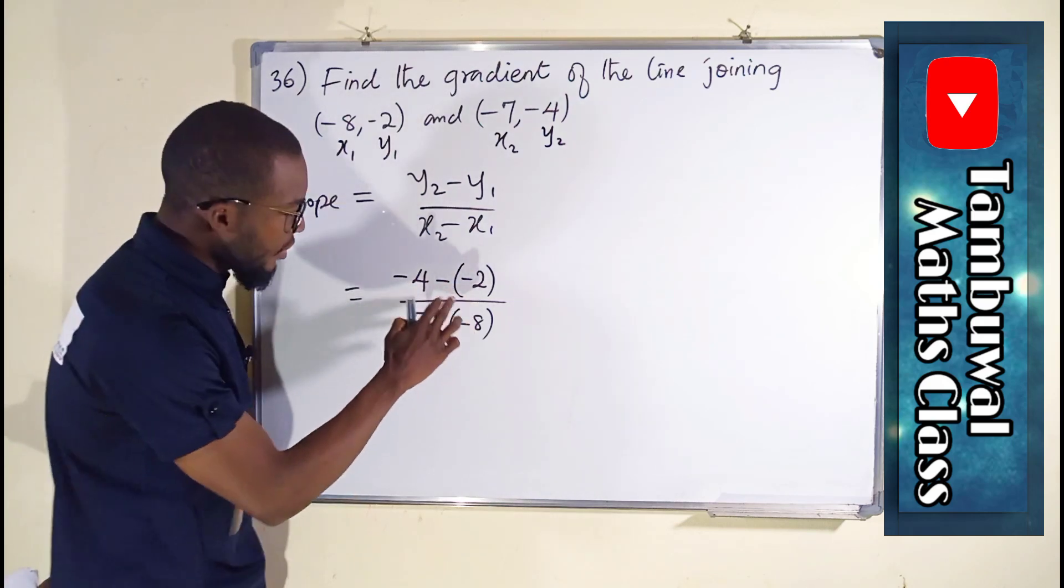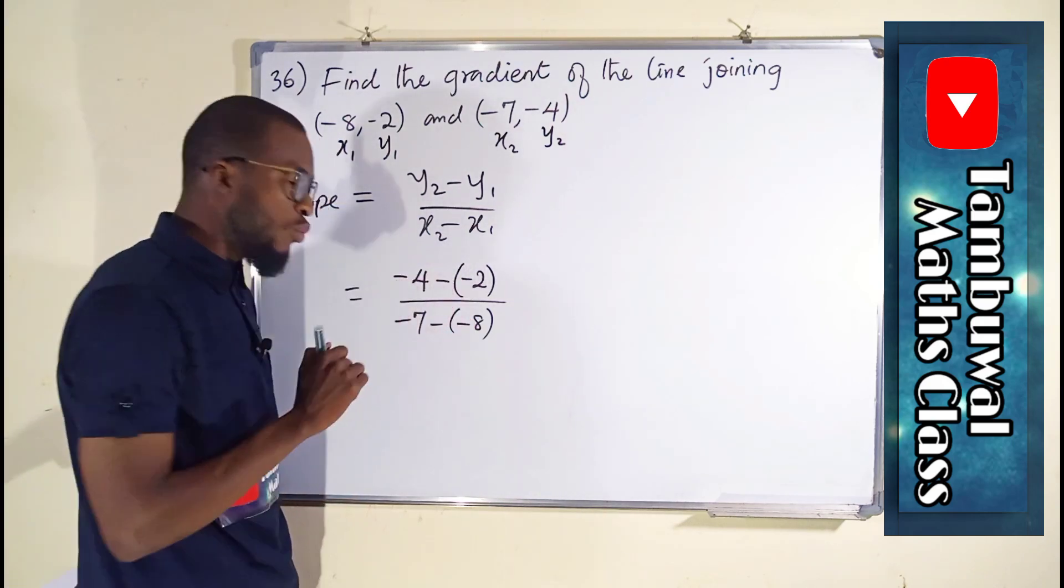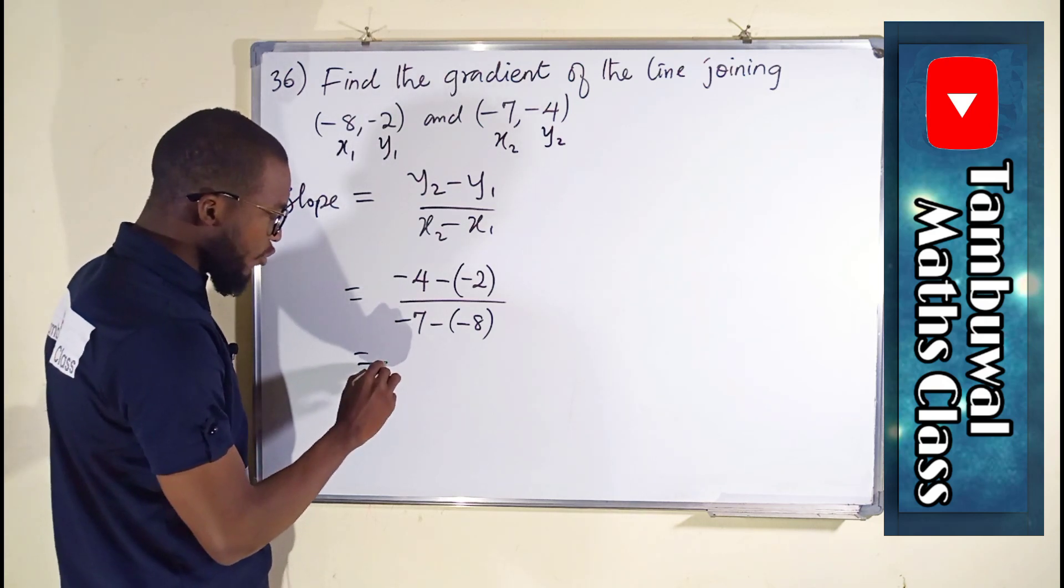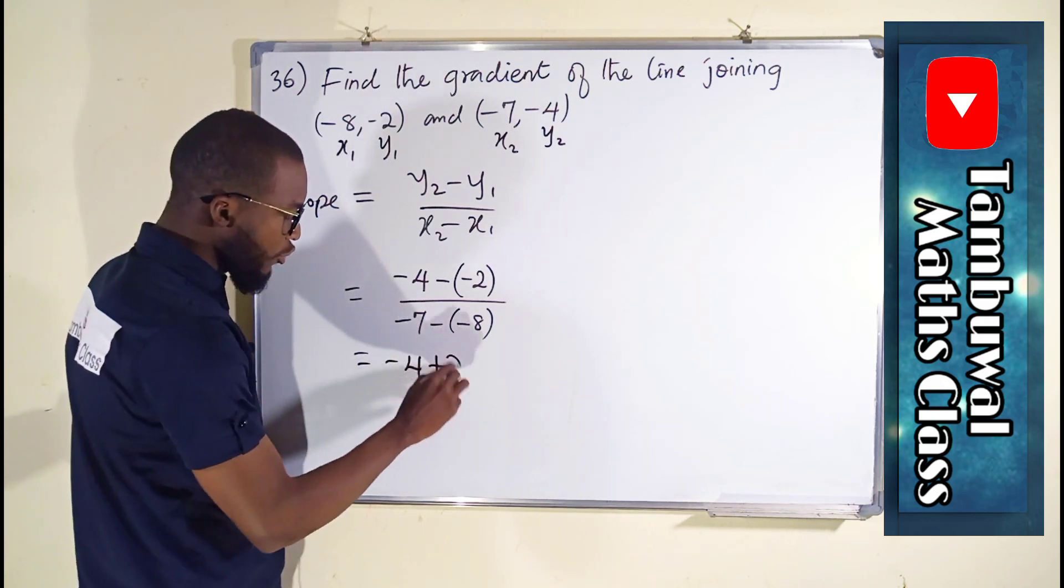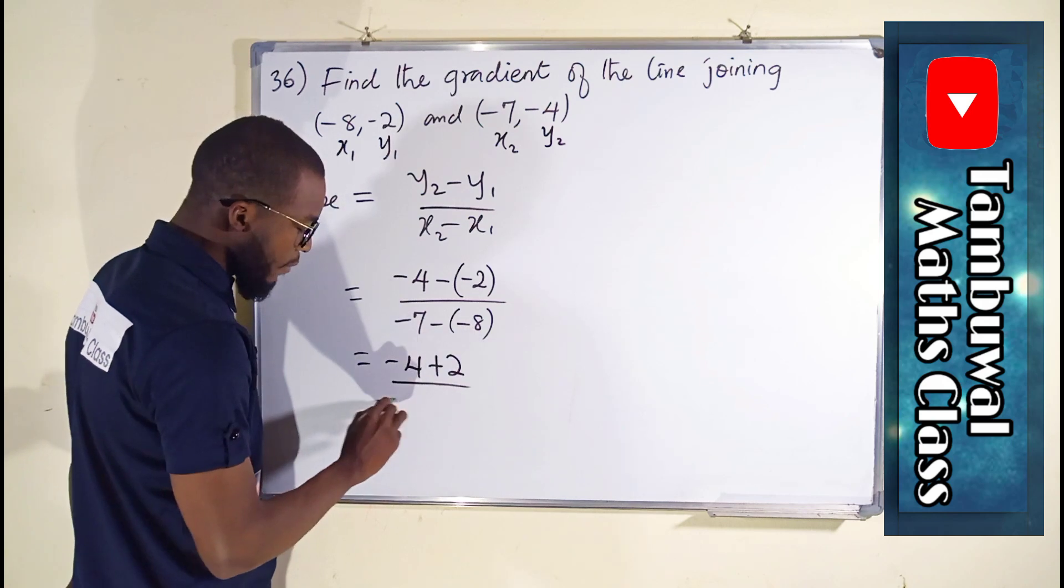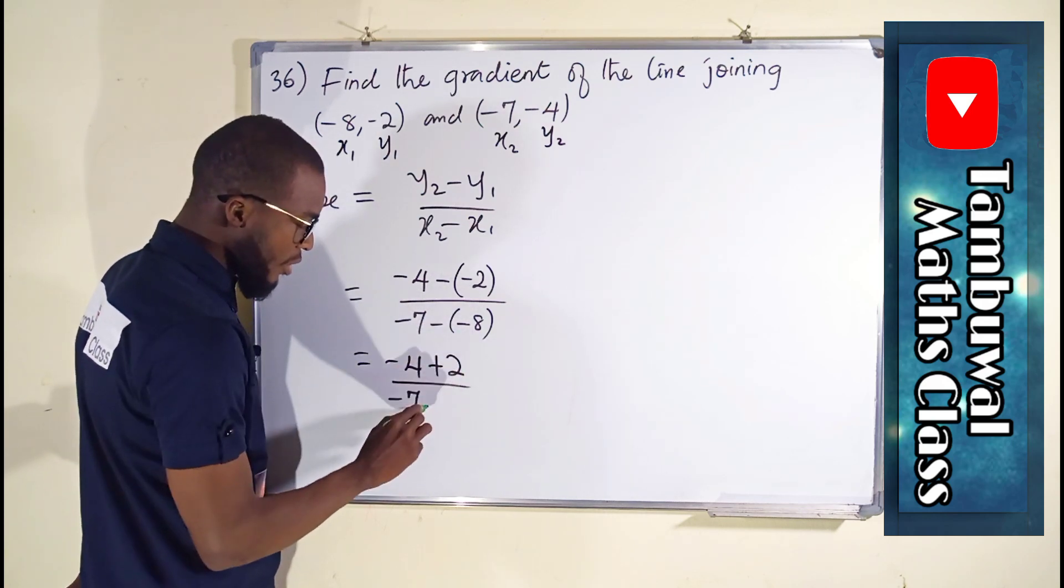If you expand this parenthesis, this minus will change this to plus. This is equal to minus 4 plus 2 divided by minus 7. This will also become plus.